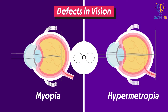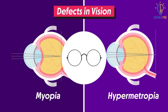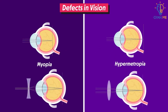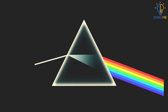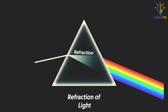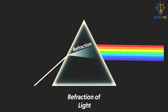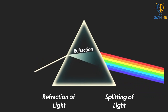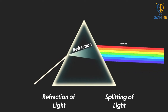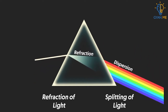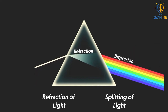Spectacles made from lenses of appropriate power are used to correct these defects. A lens is a solid, transparent object that causes the refraction of light rays. But like the lens, we also have another optical instrument that not only causes the refraction of light, but also another phenomenon associated with light, which is the splitting of light. This phenomenon is called dispersion. The splitting of light into its constituent colors is called the dispersion of light.